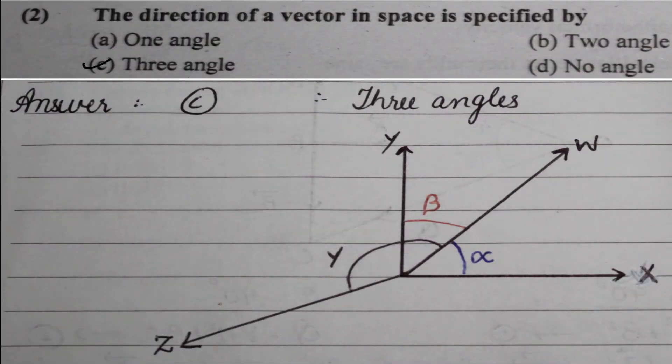Next question: the direction of a vector in space is specified by how many angles? The diagram below shows that three angles are specified for a vector in space, so option C is the correct answer.